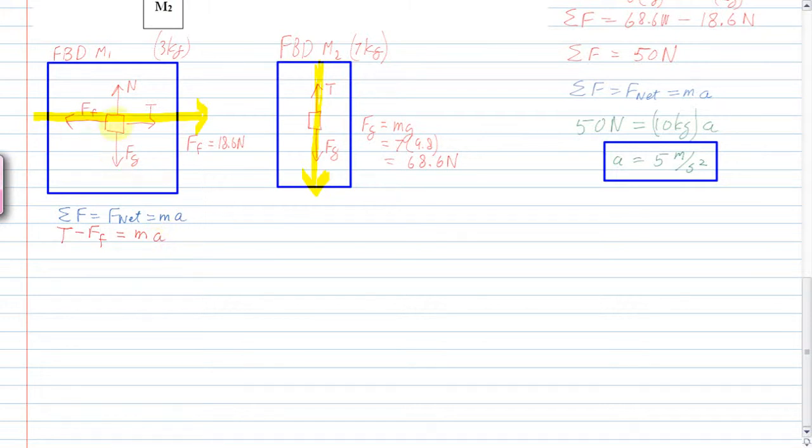So, we take the winning force, tension minus the frictional force. So, tension minus the frictional force of 18.6 newtons is equal to the mass, 3 kilograms times the acceleration, 5 meters per second squared. We do the math. 15 plus 18.6 is 33.6 newtons.